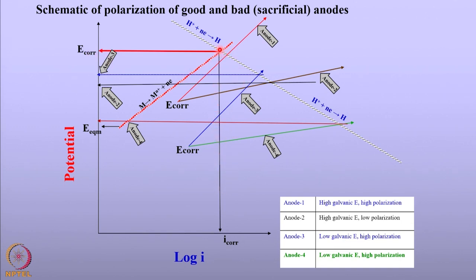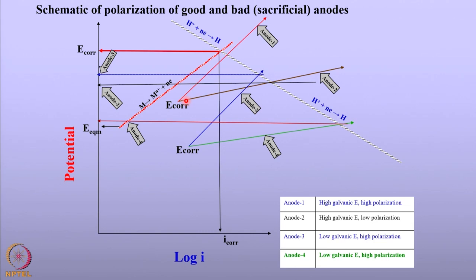The metal to be cathodically protected has its corrosion potential suppressed toward a more negative direction. This is achieved by connecting the structure to a sacrificial anode. Let us look at four different anode characteristics. We consider two anodes of differing corrosion potentials — when these anodes are buried in soil or an electrolyte, they establish a potential called the corrosion potential, denoted E-cor.